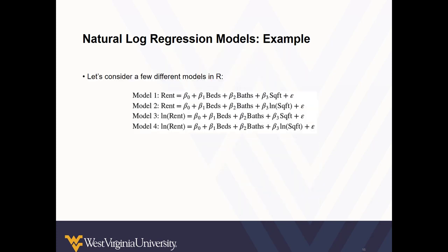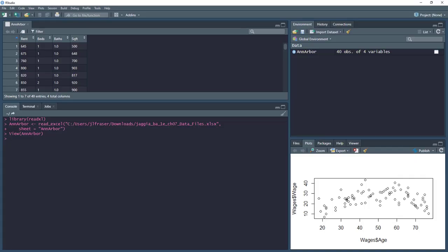So let's take a look at some different models. In our first model, we are interested in predicting rent with beds, baths, and square feet. So we're going to create model 1 and this is a linear model. Rent is our dependent variable. Beds, baths, square feet are our independent variables, and we're using data from our Ann Arbor dataset. So now I've created model number 1.